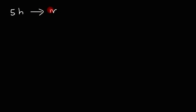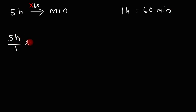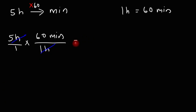Let's say the time is five hours. How do we convert that to minutes? If you want to convert hours into minutes, you need to multiply by 60. The reason is that one hour is equal to 60 minutes. Set up the conversion as a fraction: 60 minutes over one hour, so the unit hours cancel. It's 5 times 60, and you get 300 minutes.